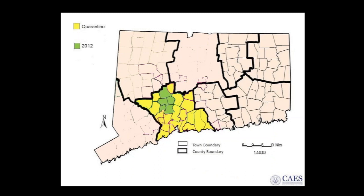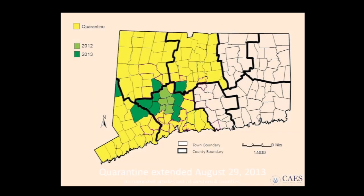When the emerald ash borer was first found in Connecticut in 2012, originally in Prospect in north-central New Haven County and then four surrounding towns, the Connecticut Agricultural Experiment Station met with USDA APHIS and made a decision to quarantine New Haven County. In 2013, EAB showed up in nine more towns bringing the total to 14, including three new counties — Hartford, Litchfield, and Fairfield — so the quarantine was extended to those counties. At this point the four western counties in Connecticut were quarantined.